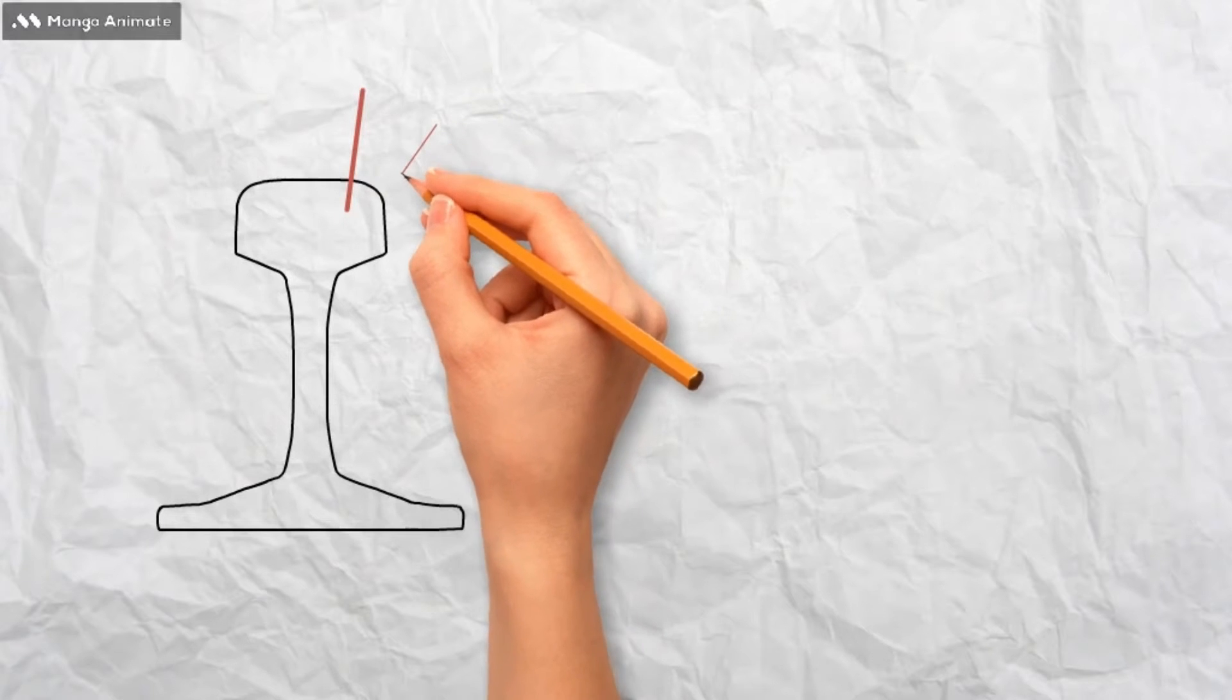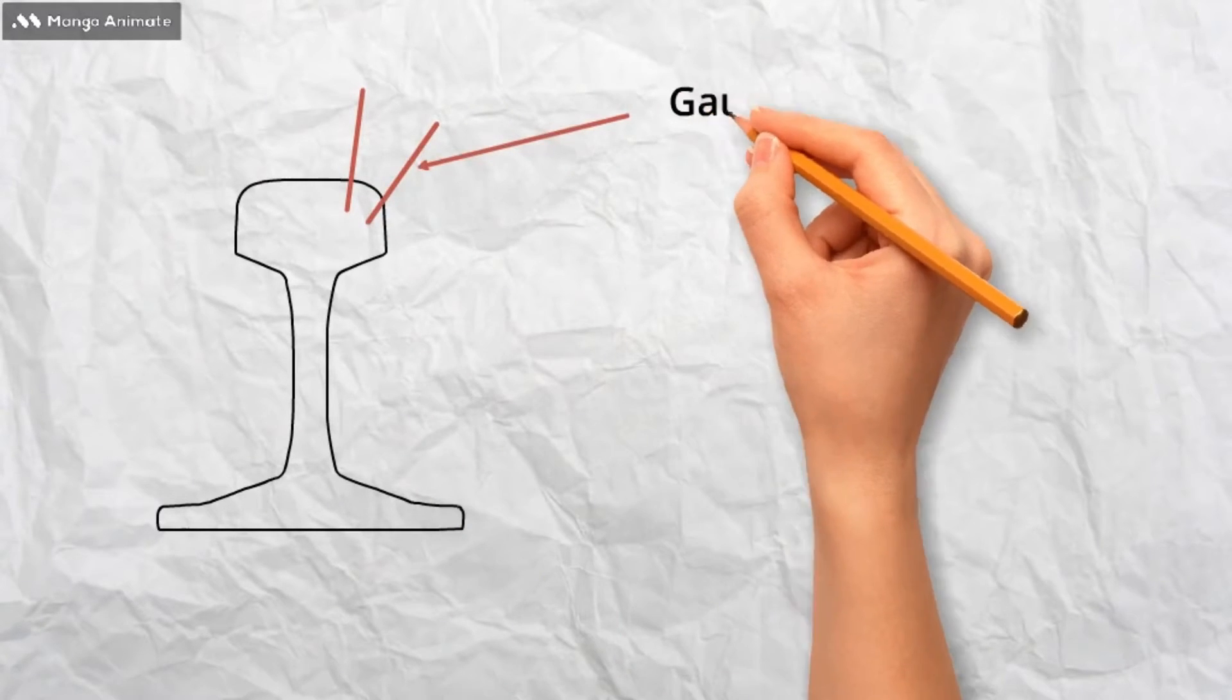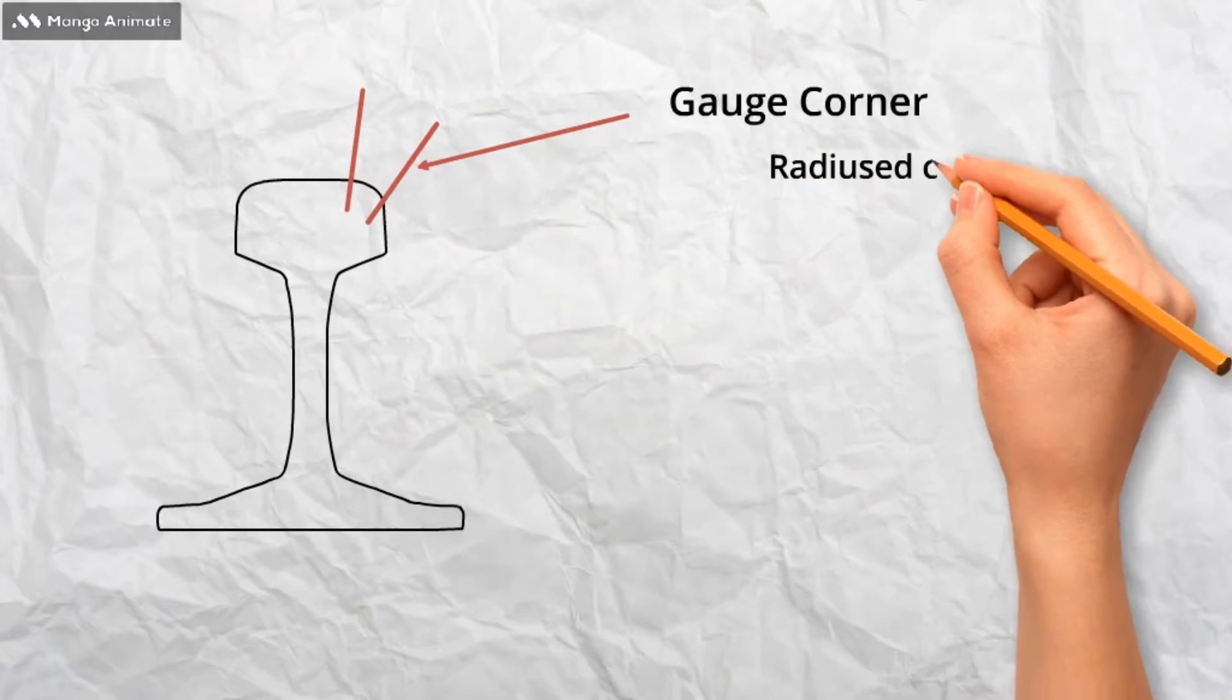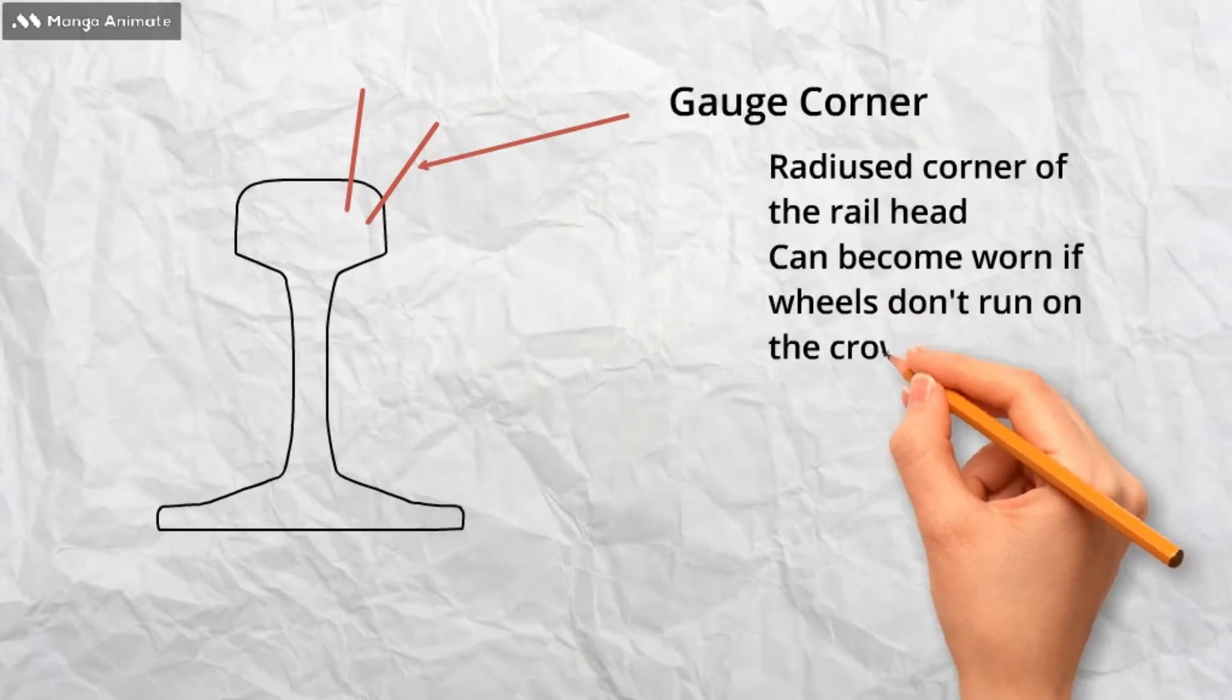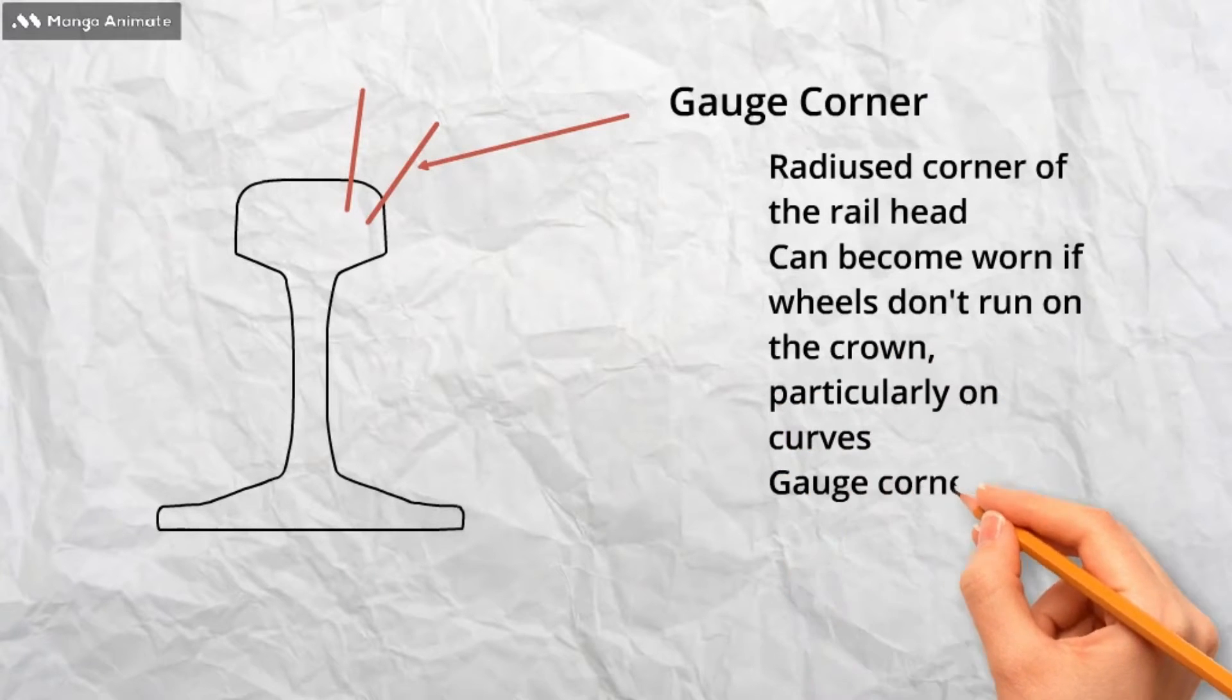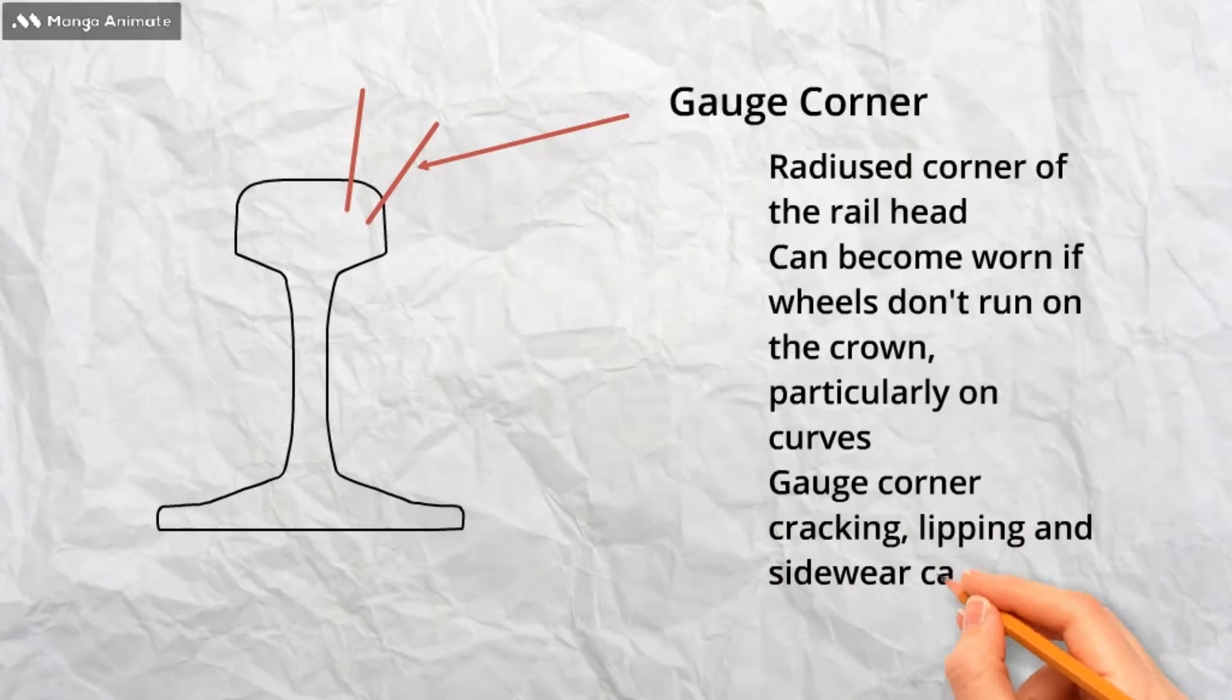Next up, gauge corner. This is the radius corner of the head of the rail that is on the inside of the track. This is close to the flange of the wheel. It is important to keep the wheel rail contact away from this area to avoid wear on the rail. This wear can be in the form of gauge corner cracking, nipping or side wear.